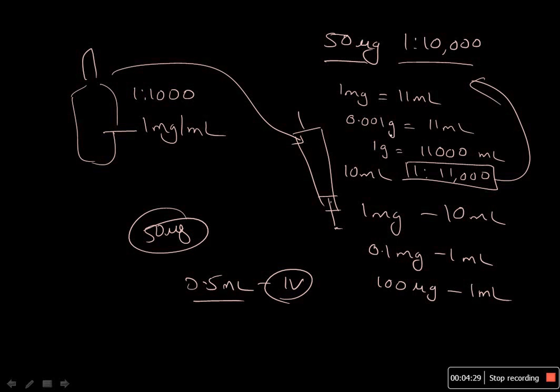So approximately the drug dilution is 1:11,000, which is approximately 1:10,000. This is how you can check the drug dilution. The dilution 1:11,000 or 1:10,000 is in proportion to 1 g in 1000 ml.